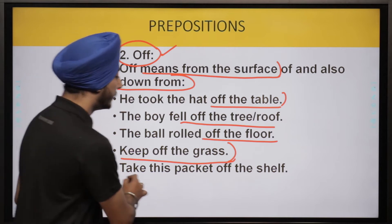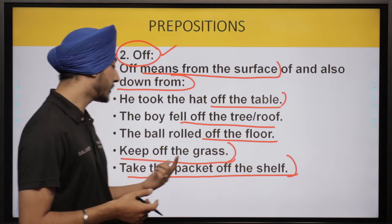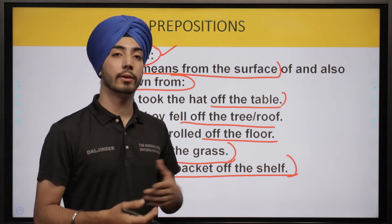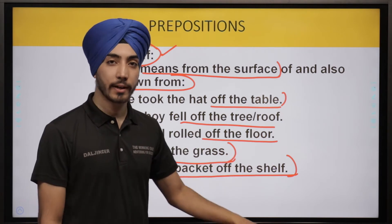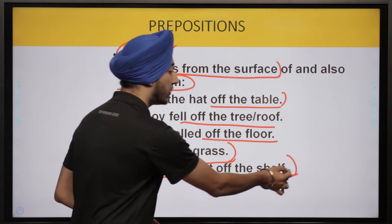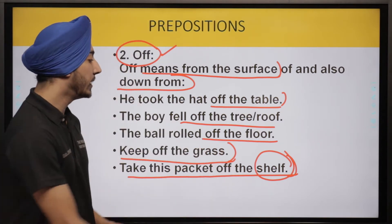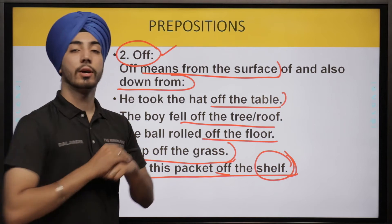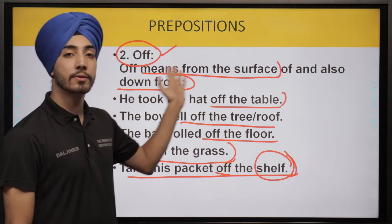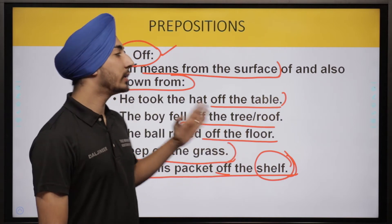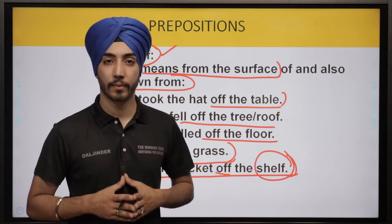'Take this packet off the shelf' — remove this packet from the shelf. Here, both uses of 'off' can be seen: the shelf may be at a higher position, so it involves coming down, and the shelf is also a horizontal surface. So 'off' is used with reference to some kind of surface, or to indicate coming down from a position.